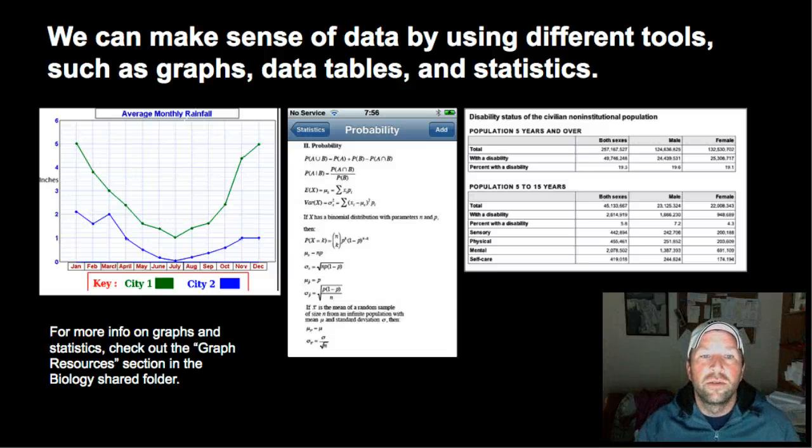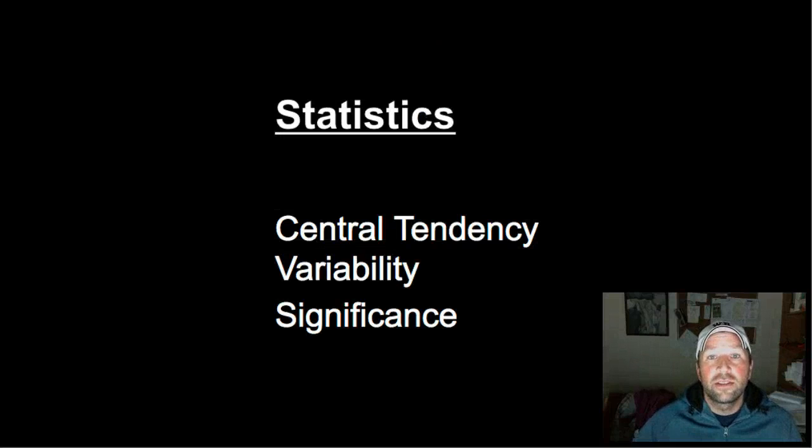We make sense of data using three basic tools. One is graphs, a second is statistics, and a third is a data table. Now graphs and data tables are basically visual ways of representing data, and if you'd like more information about graphs, there's a graph resources folder in our biology Google Drive. Statistics then is looking at ways of manipulating or analyzing the numbers to find out what they mean, and that'll be the focus of this presentation. So for statistics we have basically three big ideas: central tendency, variability, and significance. Now significance is more advanced, and for our purposes in tenth grade biology we won't be doing much with significance, but if you go on to AP Biology or go on to a career in the sciences that'll be a really important idea.